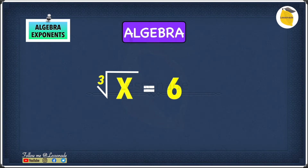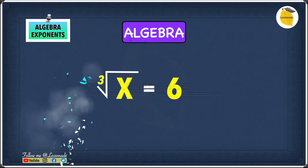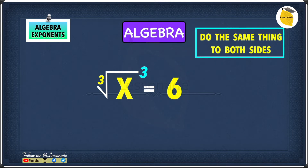In the previous example, when we had a square root we squared it. In this example we have a cube root, and to undo this cube root we're not going to square it like before — we only squared because we had a square root. Because we have a cube root in this example, we're going to cube it instead, because cube root of x cubed will cancel each other out.